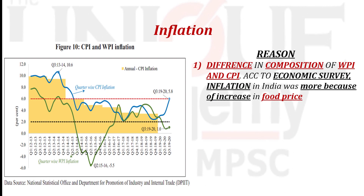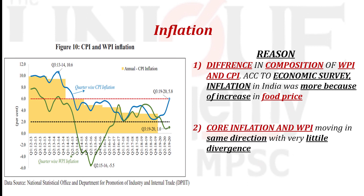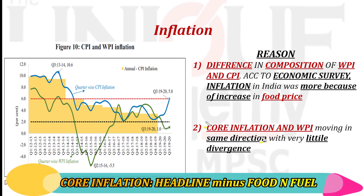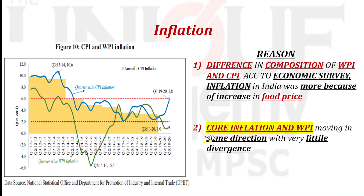The second reason: the economic survey showed a chart where core inflation — which is headline inflation minus food and fuel — and the WPI line are moving in the same direction. This means that inflation in India is being driven by food prices. That is why there is a divergence between WPI and CPI. This divergence — CPI at 5.8% and WPI at 1% — is very rare and definitely an important concept for this year's exam.